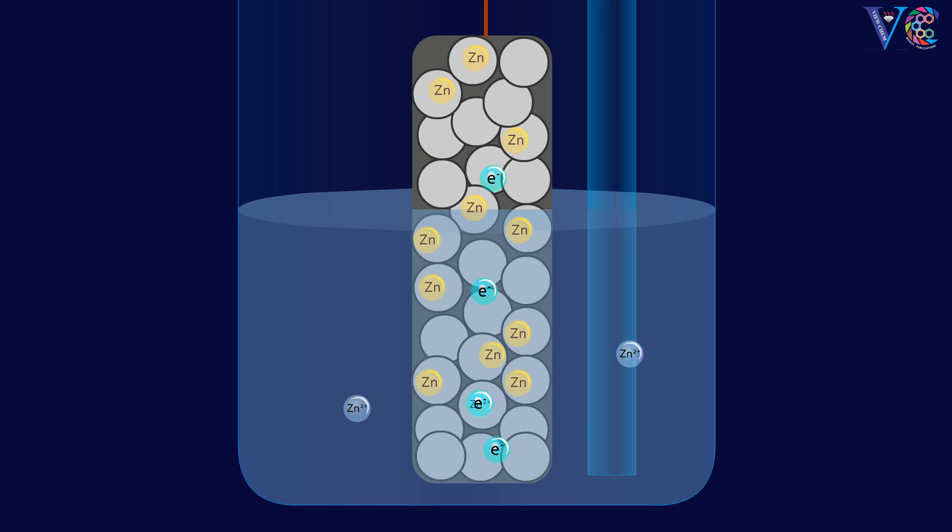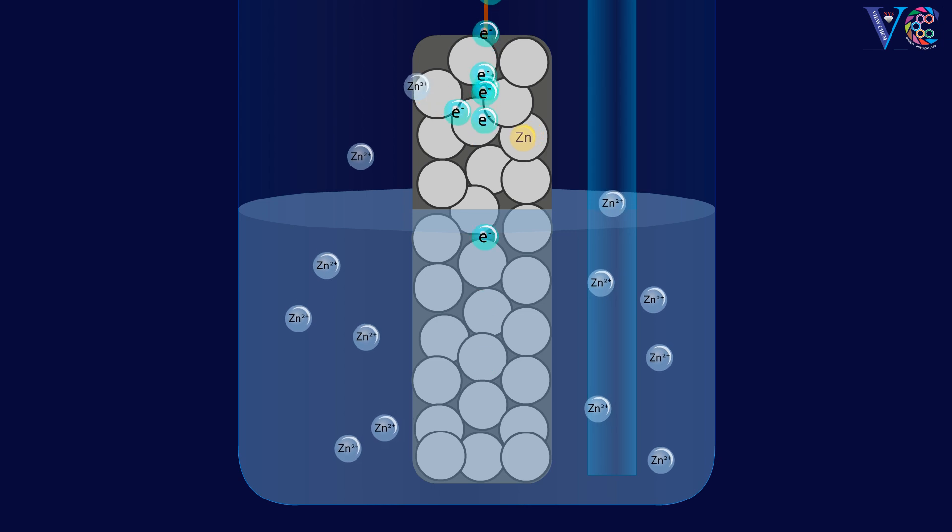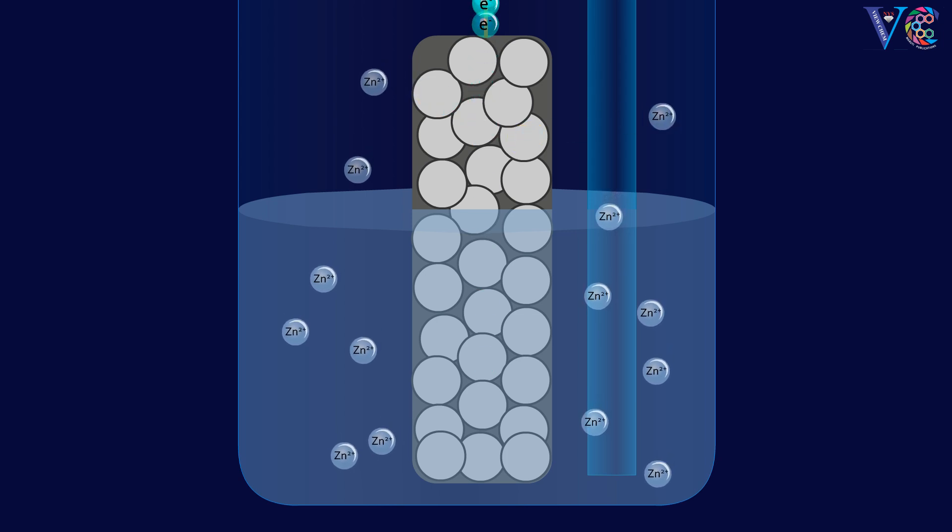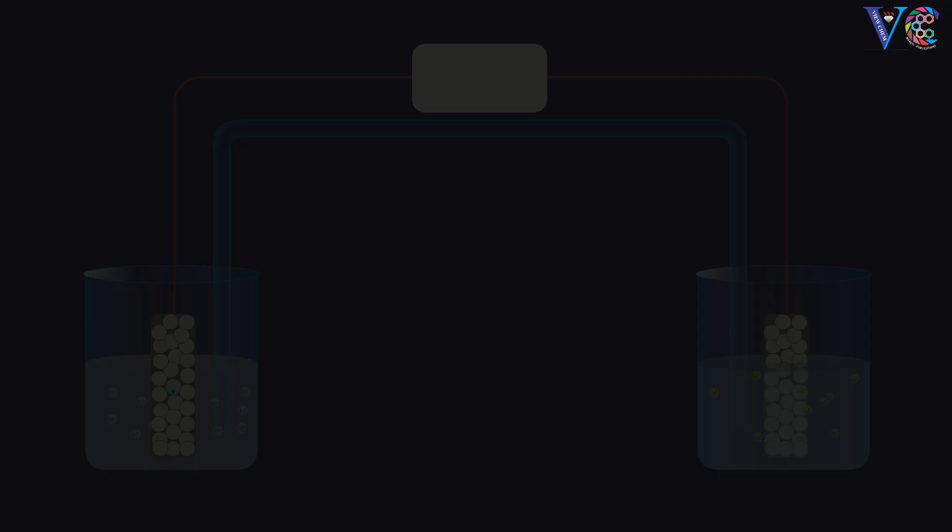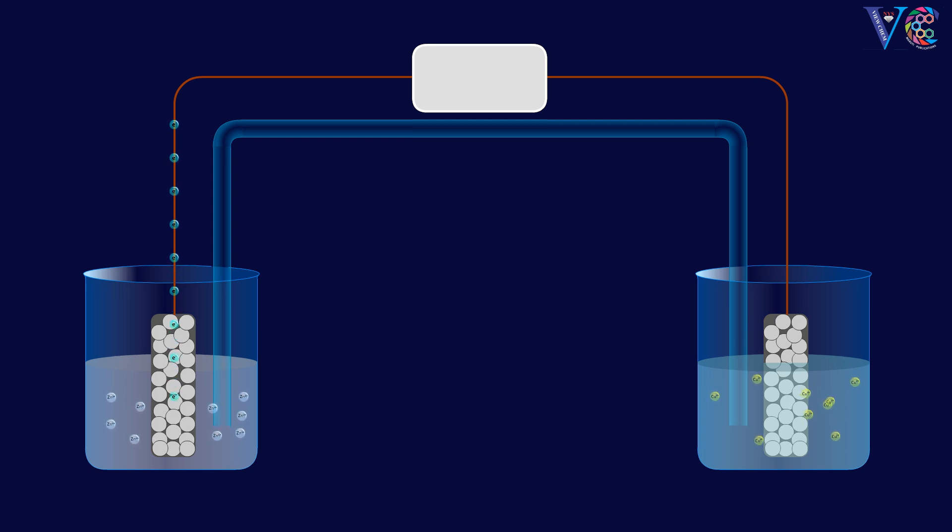At anode, oxidation takes place. As a result, zinc loses electrons and zinc-2-plus ions are formed. The liberated electrons travel through the external circuit towards the cathode.